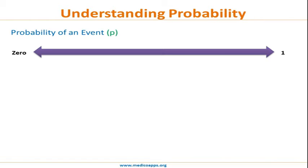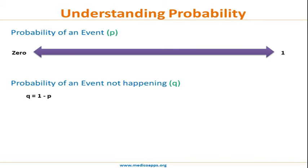Zero probability means you are certain the event will never happen; one probability means you are 100% certain the event will happen. You cannot have a negative probability — there is no concept of negative probability. The value of probability is always from zero to one, and you cannot have a probability greater than one. Probability of an event happening is denoted by small p.